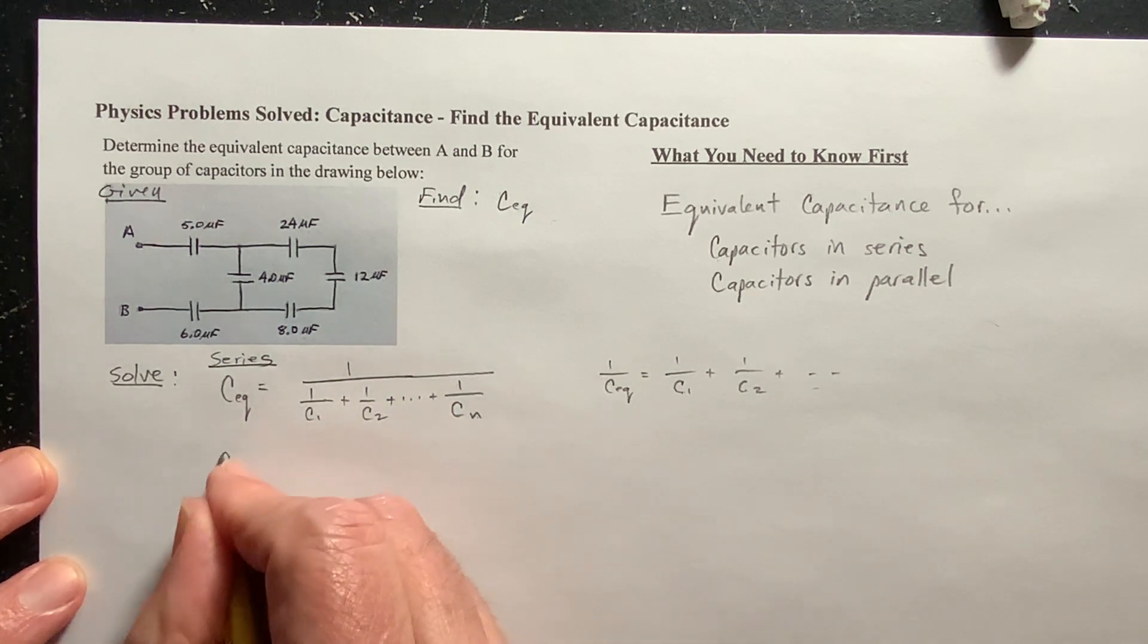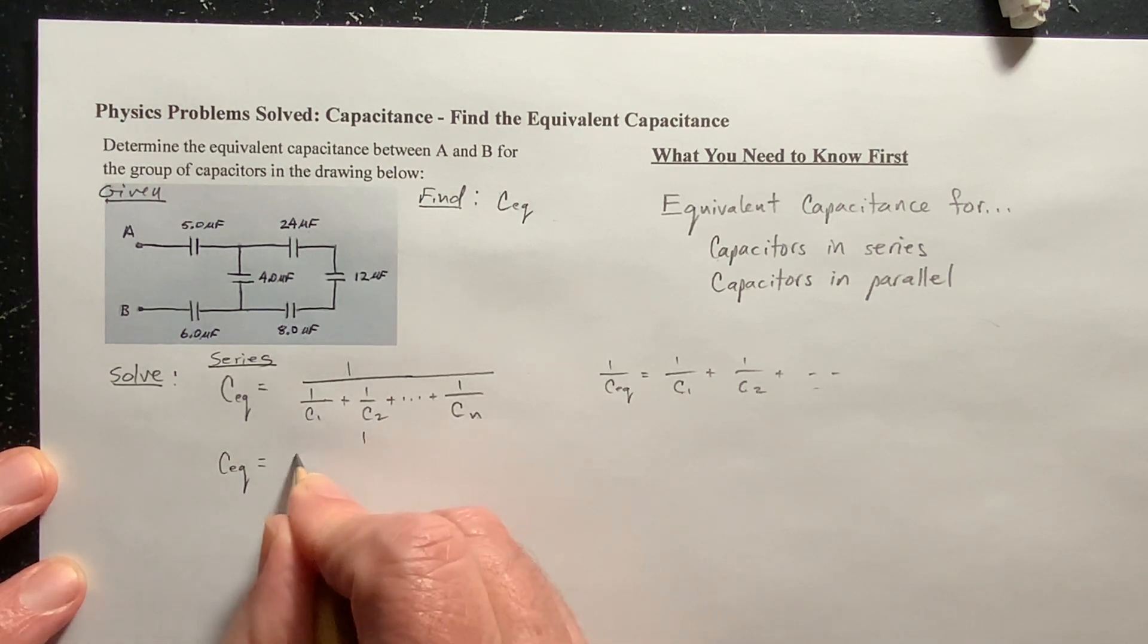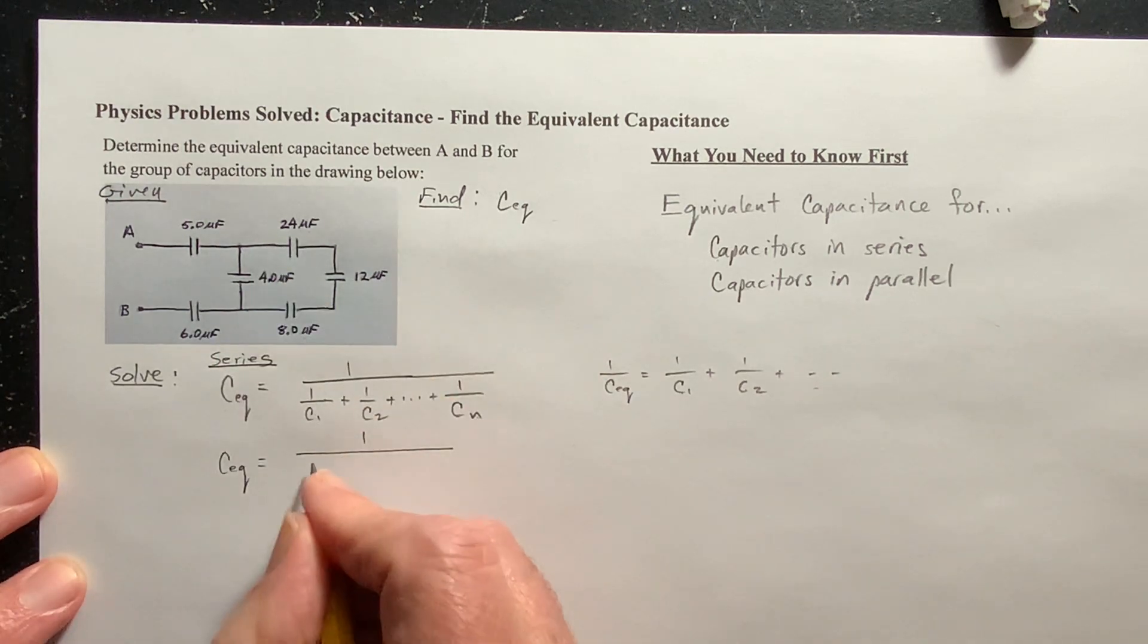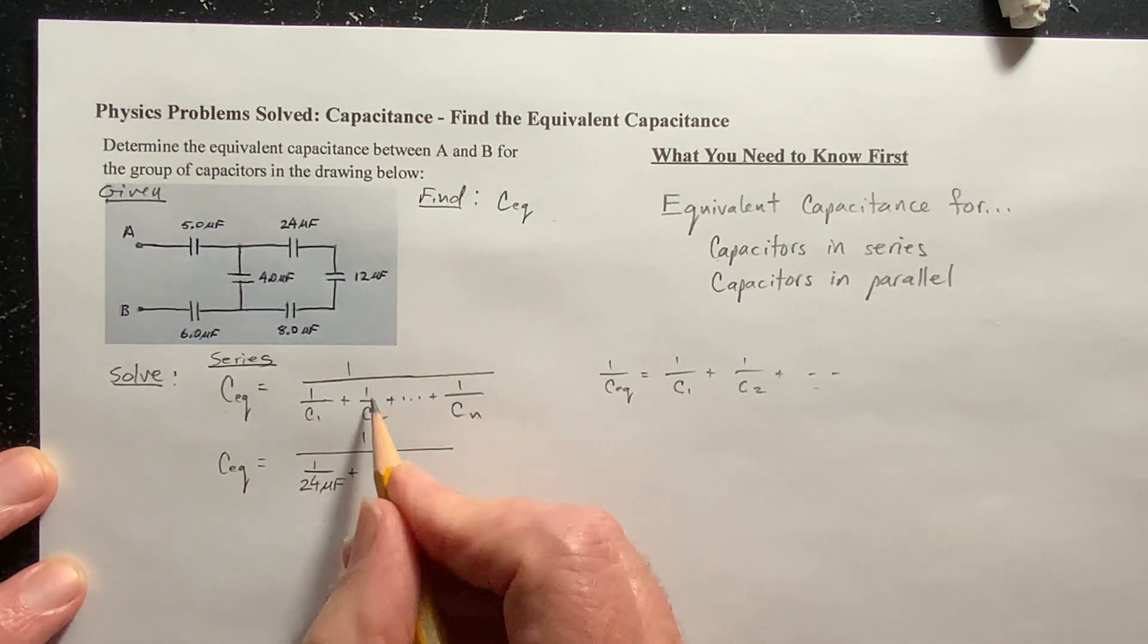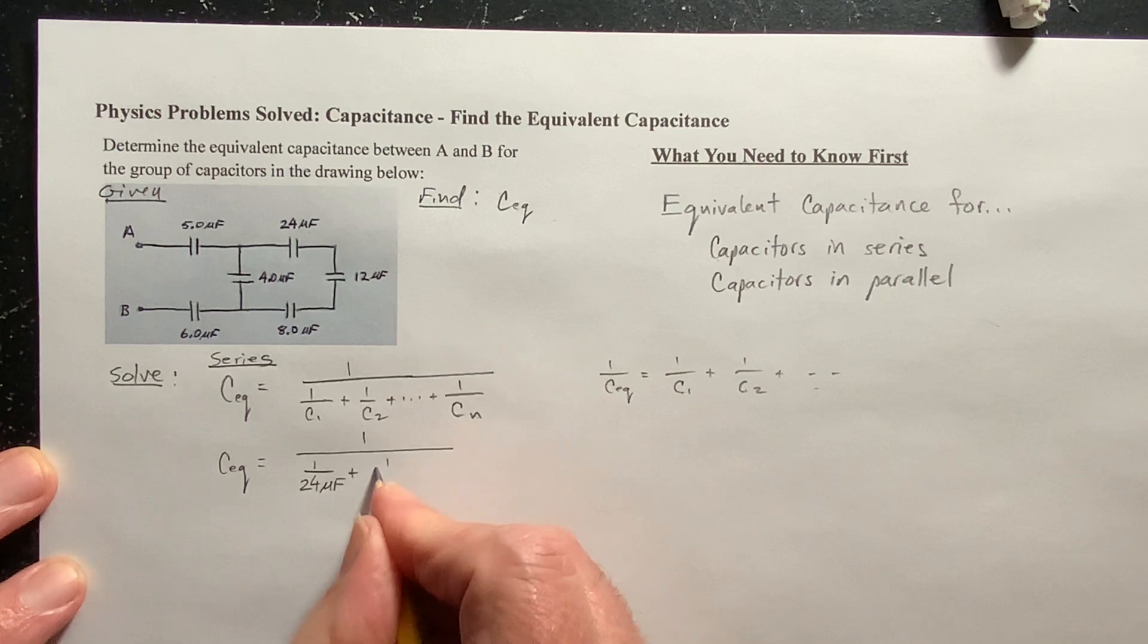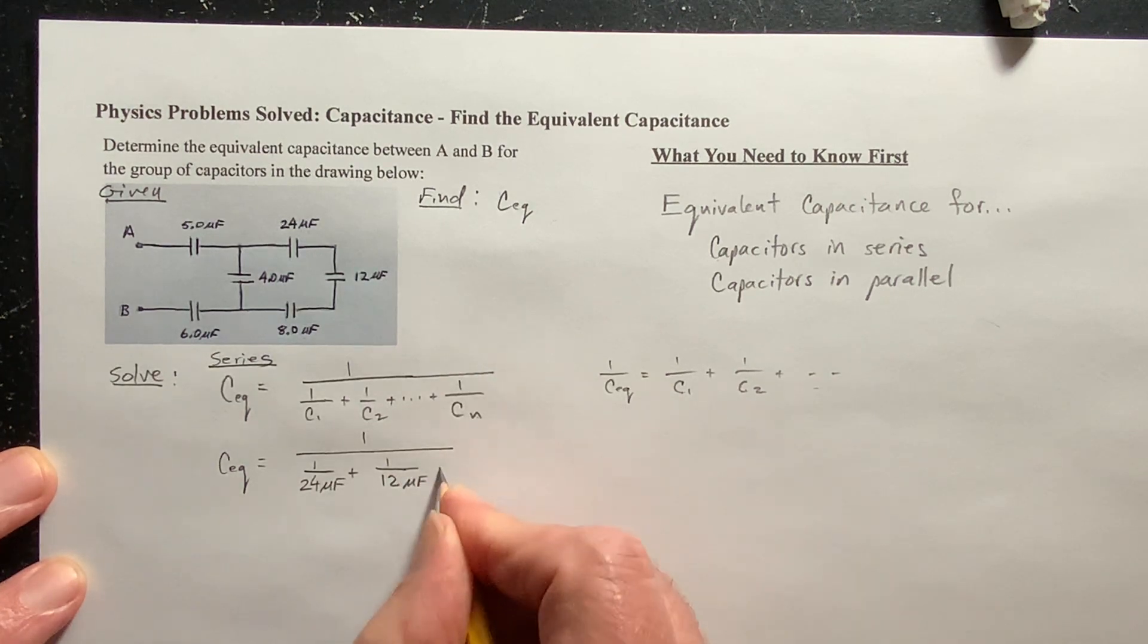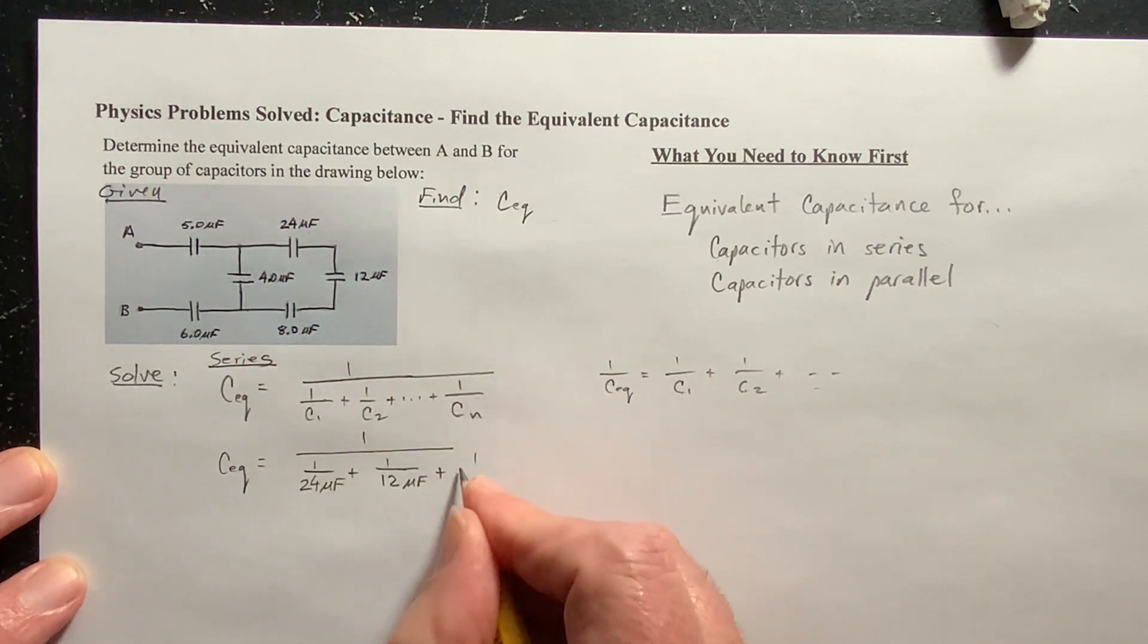So, this is pretty straightforward here. I've got these three. So, let's see, that's 1 over, and here we have 24, so that's 1 over 24 microfarads, plus in the C2 here, that's 1 over 12 microfarads, plus, and we have another one in series, 8 microfarads.